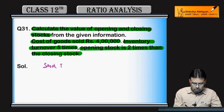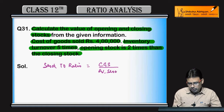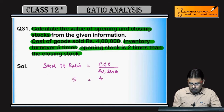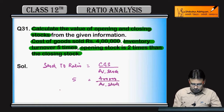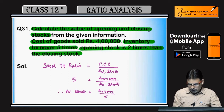Stock turnover ratio is cost of goods sold divided by average stock. Stock turnover ratio is five times and cost of goods sold is four lakh, so average stock comes out to 80,000.